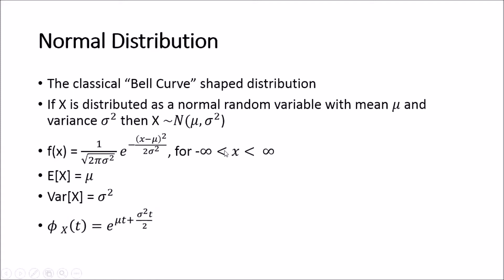Its expected value, which is the mean, is mu, and its variance is denoted by sigma squared. The moment generating function for a normally distributed random variable, given by M_X(t), is e to the mu*t plus a half sigma squared t squared. This is an important result that you may need to derive in many statistics courses, as it allows you to derive the moments of the normal distribution.